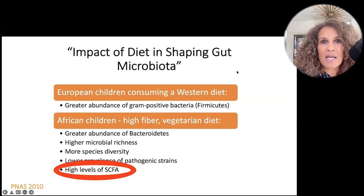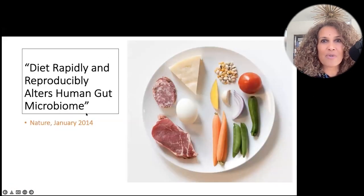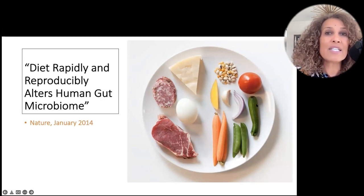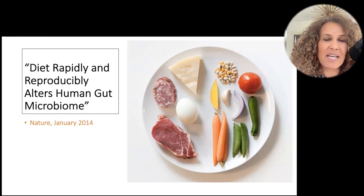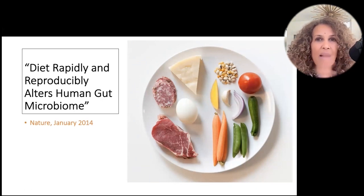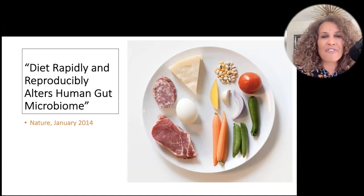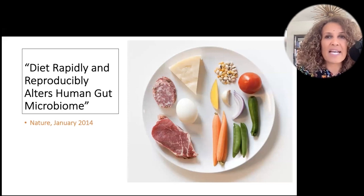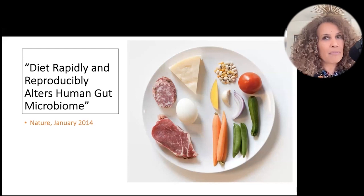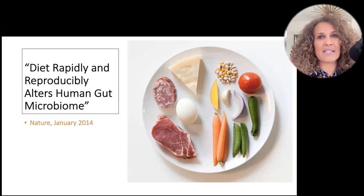Someone noted that most American toddlers have already had a dose of antibiotics by the time they are toddlers. That's actually correct — most American children have had 18 courses of antibiotics by the time they graduate high school. But back to the nutrition studies: African kids had lots of fiber, high short-chain fatty acids, lots of good bacteria; European kids had lots of fat and animal protein, low short-chain fatty acids, and bacteria associated with obesity, diarrhea, and inflammation.